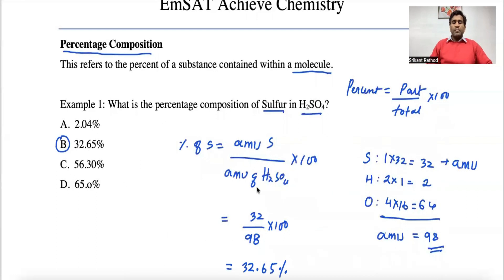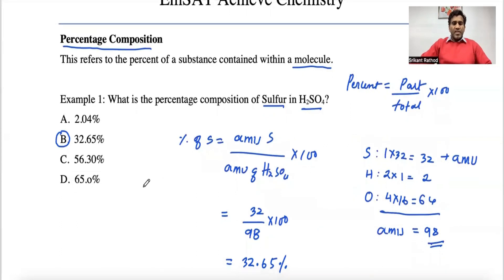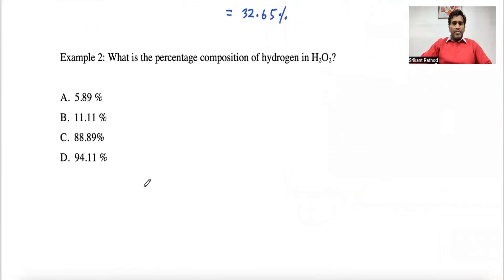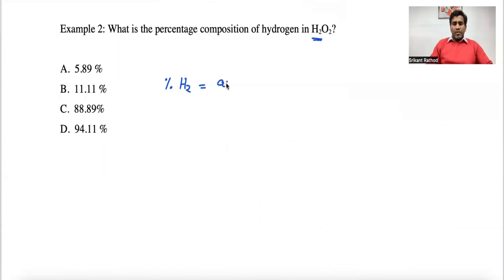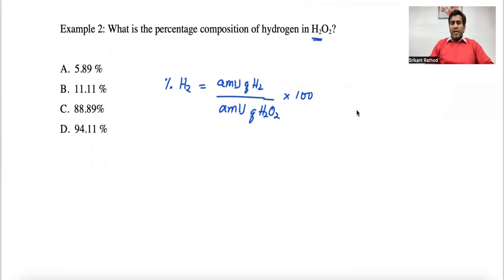The answer corresponds to option B, and this is how you calculate percentage composition — whether it's for hydrogen, oxygen, or any element, you use the same approach. Now let's take one more example: what is the percentage composition of hydrogen in H₂O₂, which is hydrogen peroxide? The formula is: percentage composition of H₂ equals atomic mass unit of H₂ divided by atomic mass unit of H₂O₂, times 100.